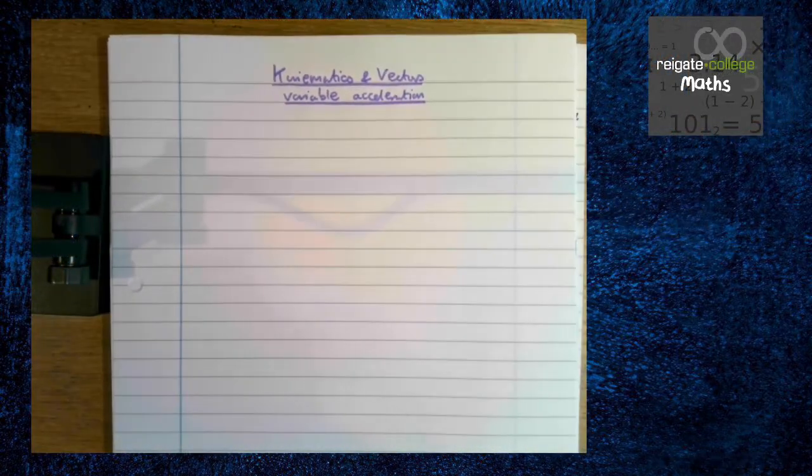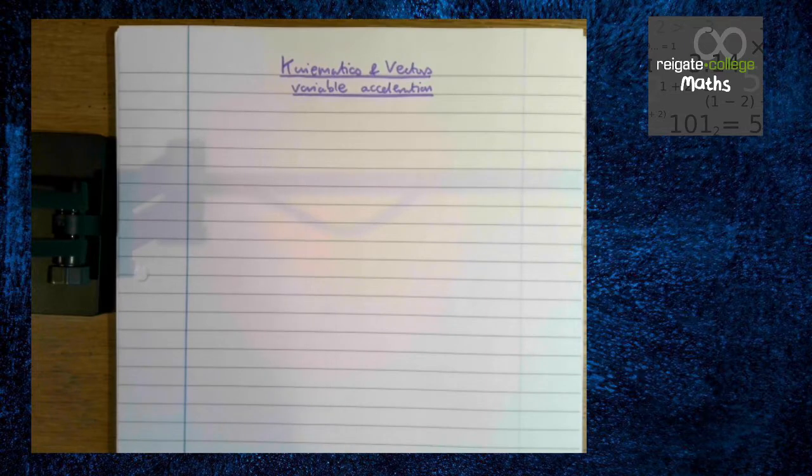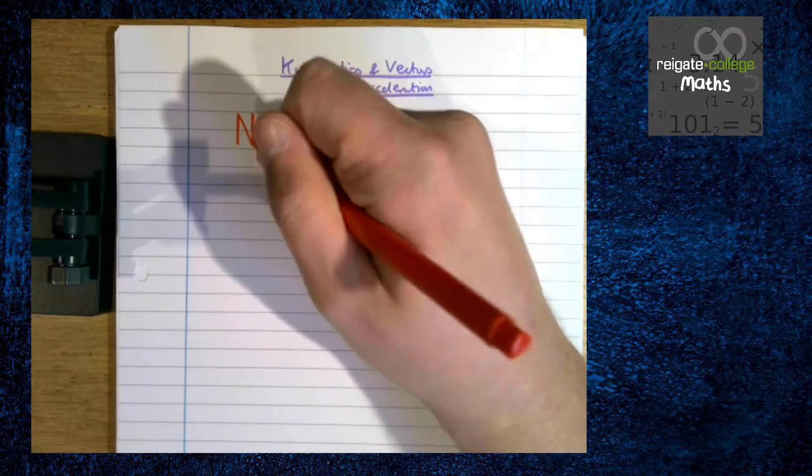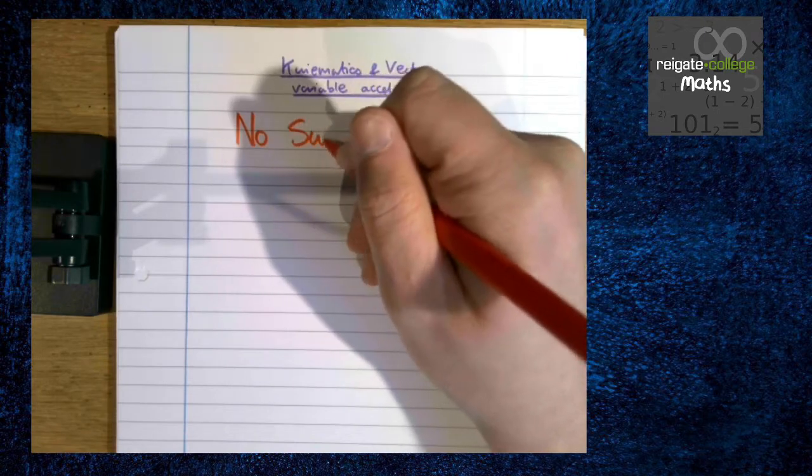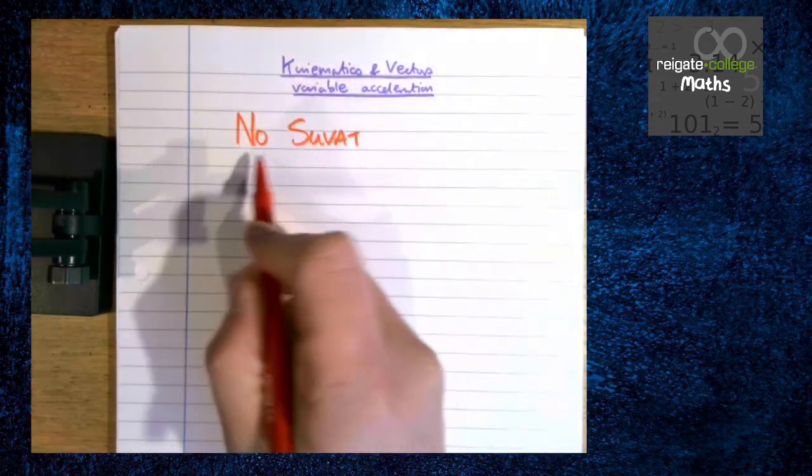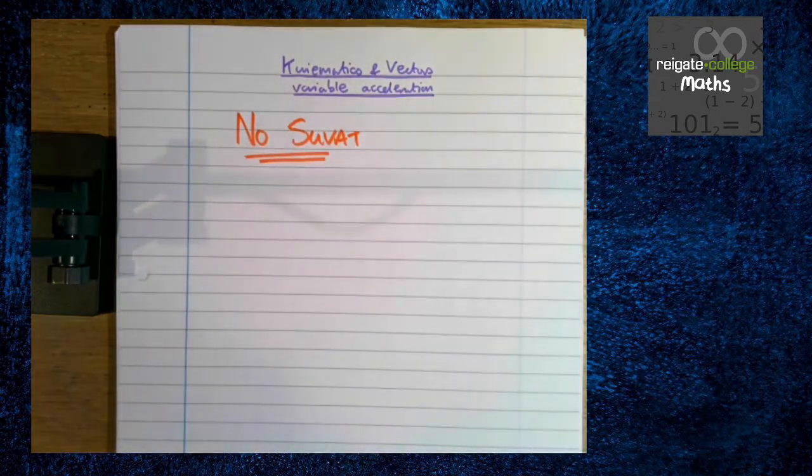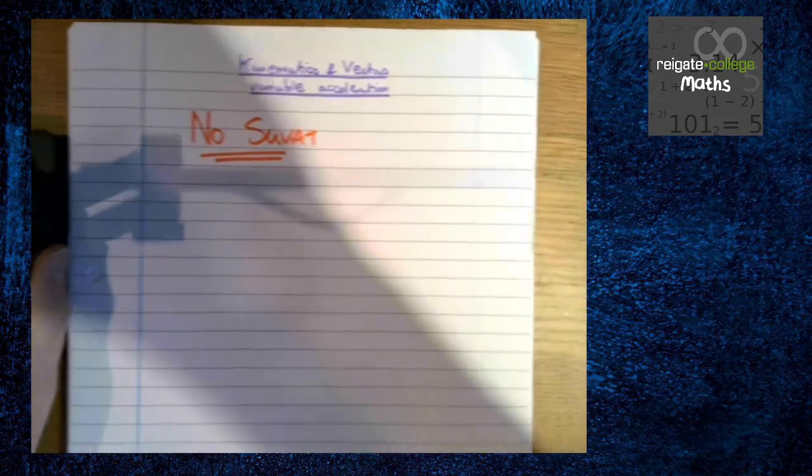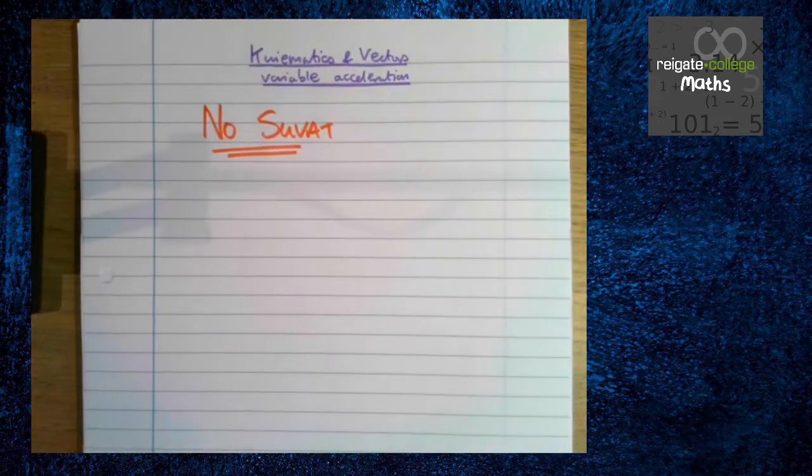The first thing to remember is variable acceleration tells us immediately we do not use SUVAT. So if a question ever talks about having variable acceleration you do not use your SUVAT equations. If you do it is incorrect.